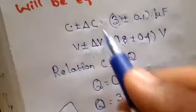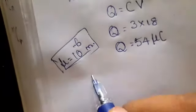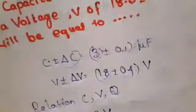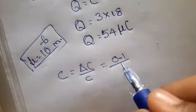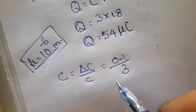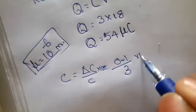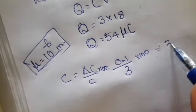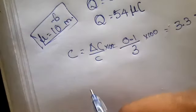Next we can find the error. The error in C, what is error in C? Delta C by C. What is delta C? Delta C is given to be 0.1 divided by C which is 3. If you simplify that, they are asking for percentage error times 100, we will get approximately 3.3 percentage.